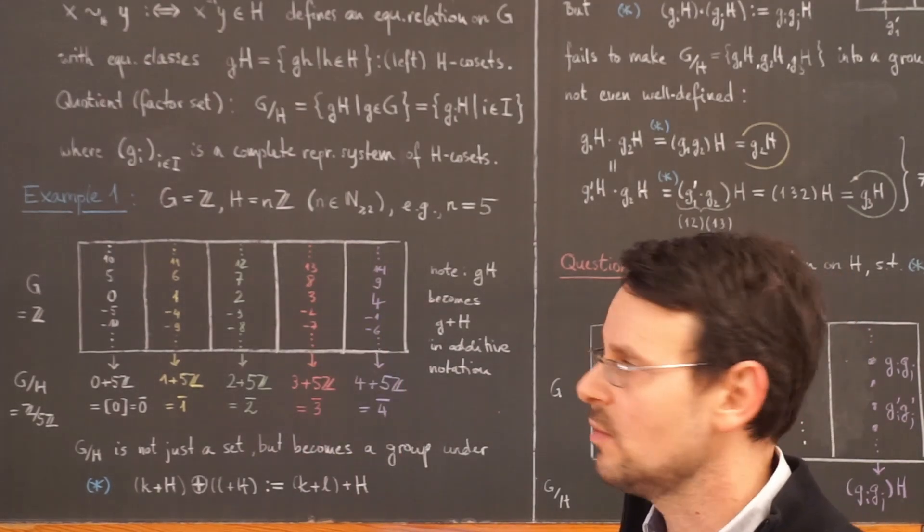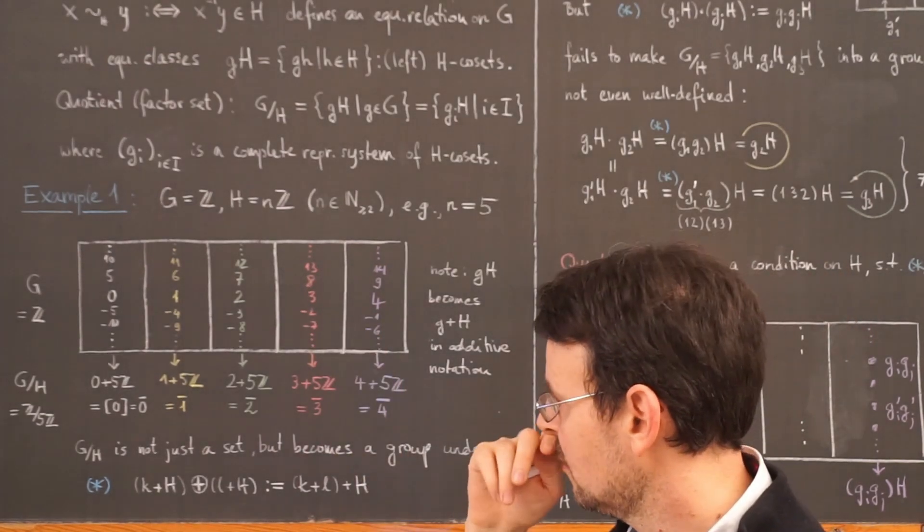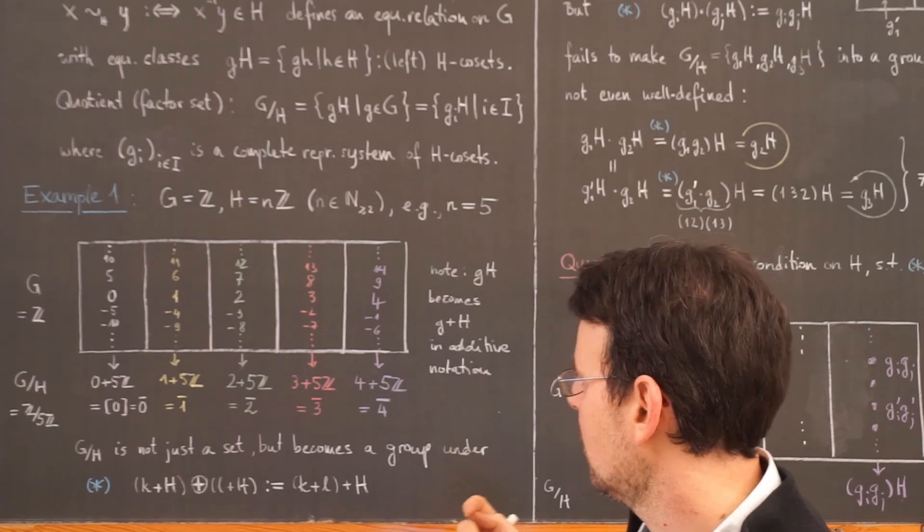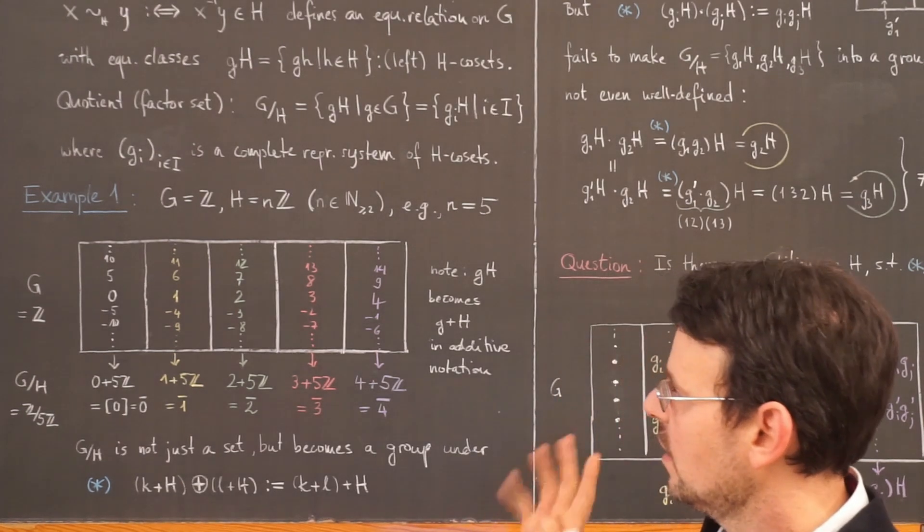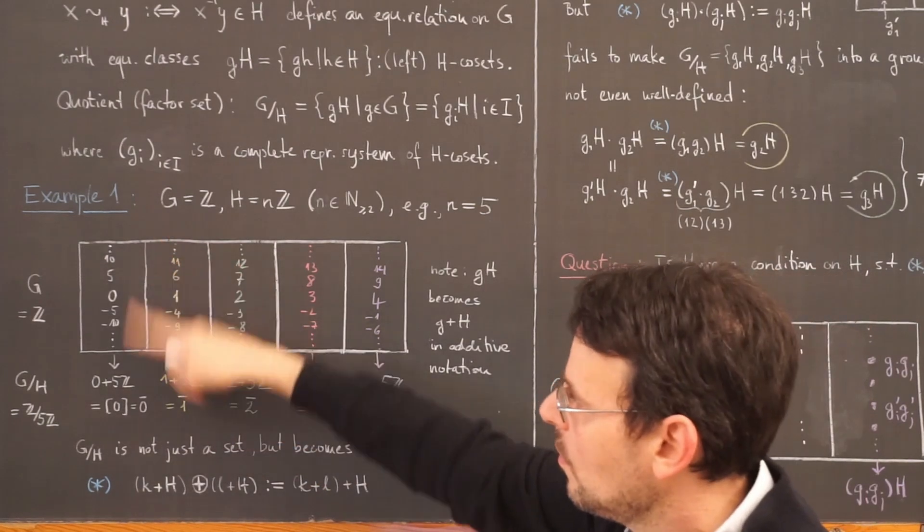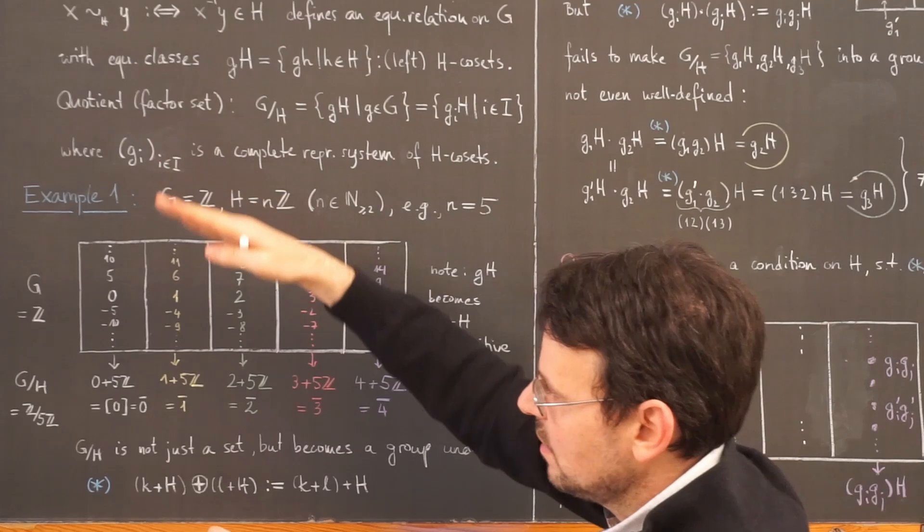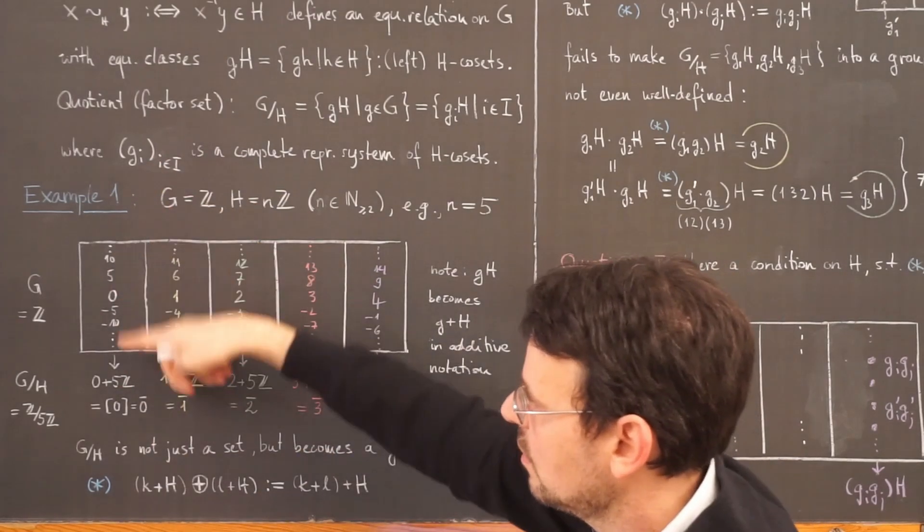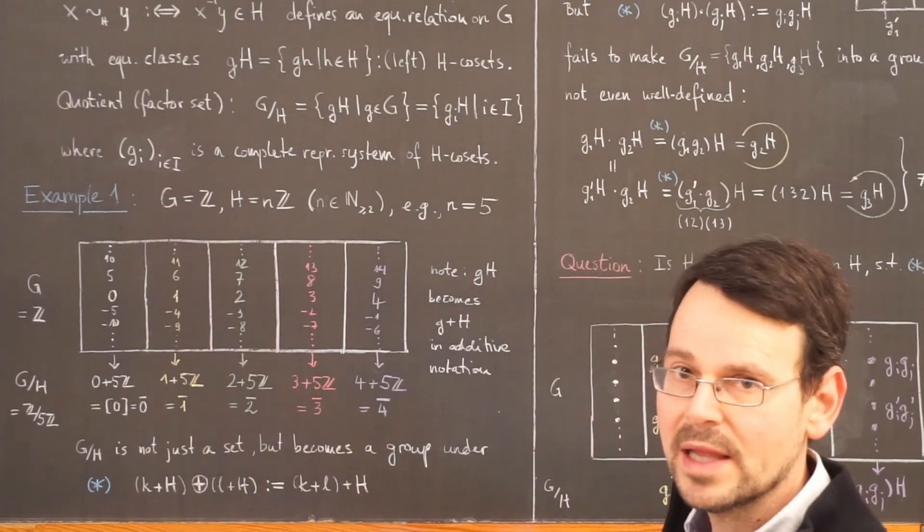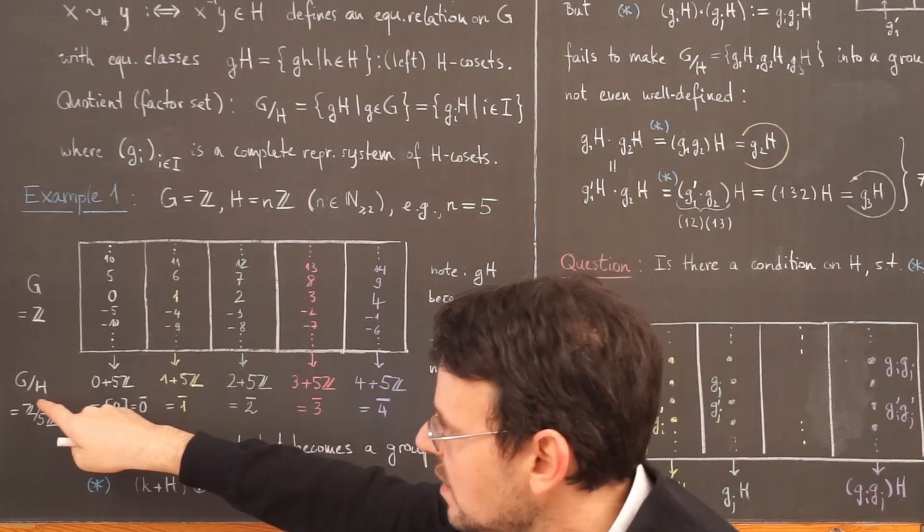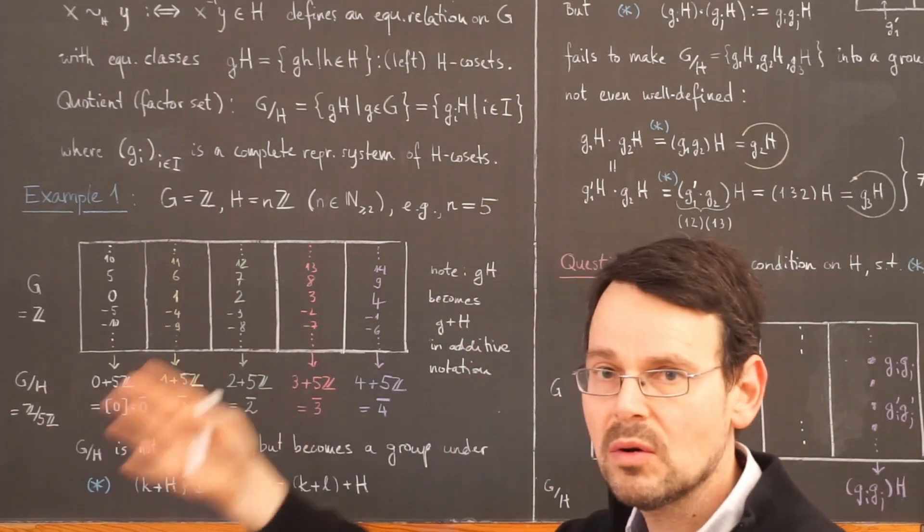And this can be shown to be generally true, which we won't concern ourselves with here. So now comes the important step. We transition to the factor set, meaning we collapse this whole first coset into one single element of this new set, of this quotient or factor set.